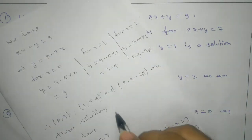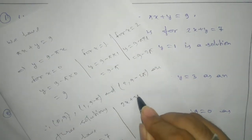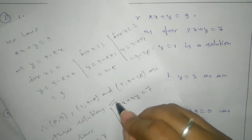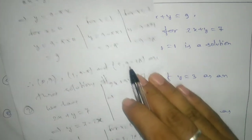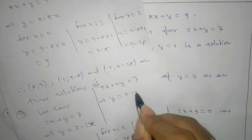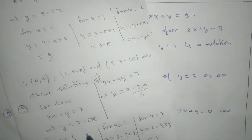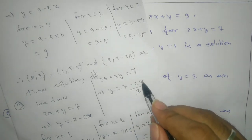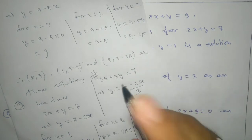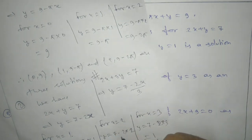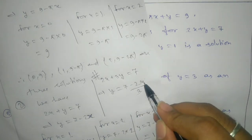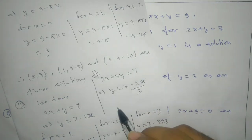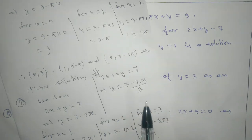Now consider a problem like 2x plus 3y equals to 7. If we are asked to find the integral solution, y equals to 7 minus 2x by 3. If we take x equals to 0, we get 7 by 3, which is not an integer, so that is not an integral solution. You need to think of a value for x such that after solving, y is an integer. Only then is the set called an integral solution.